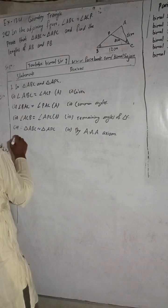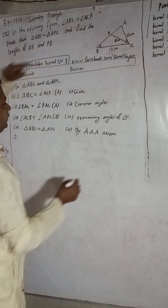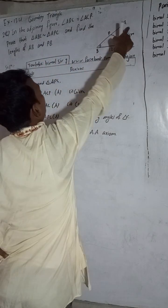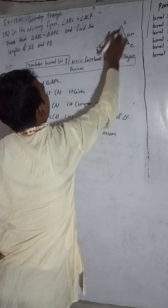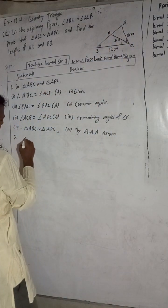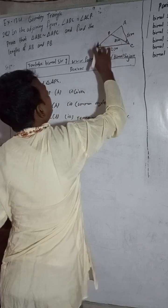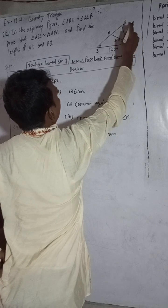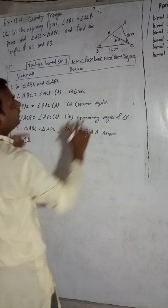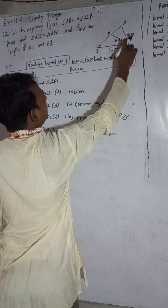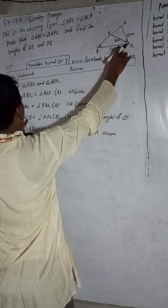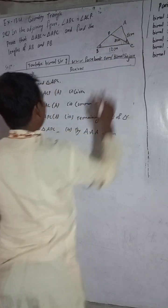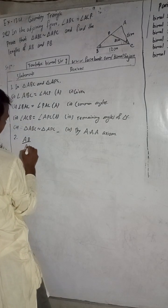Now, number 2: find the length of AB. We have to find AB and PB. So first, target AB. AB corresponds to which angle? This angle ACB. ACB is equal to ATC in the smaller triangle. So the corresponding side is AC.